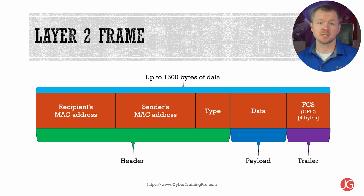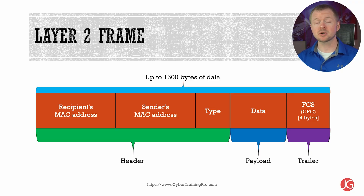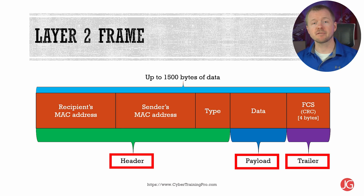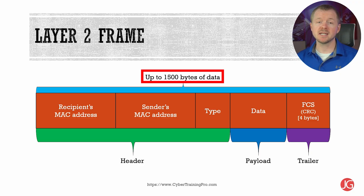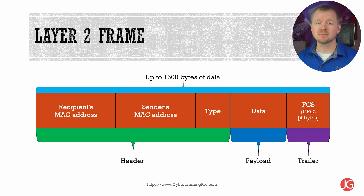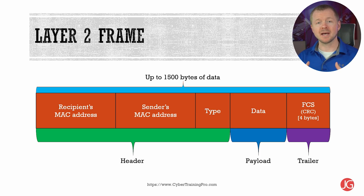We have the data field which contains what's encapsulated — layer two doesn't really care about the specifics of the data, it just sends it. We have the FCS or frame check sequence, which uses a type of binary math called cyclic redundancy check or CRC that the receiving NIC uses to make sure all the data arrived intact. You can also break down a frame into three sections: the header, the payload, and the trailer. A single Ethernet frame can hold up to 1500 bytes of data. If it's larger, the sender's system will break it down into frame-size chunks. The minimum a frame can be is 64 bytes, so if it isn't big enough, padding is added automatically.